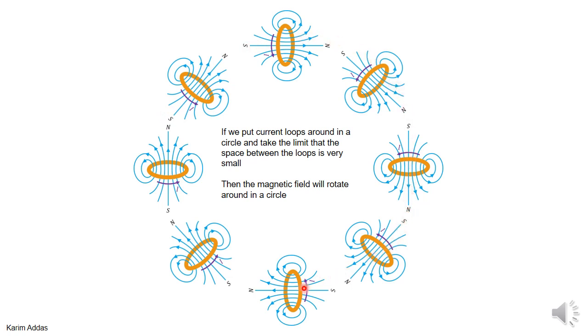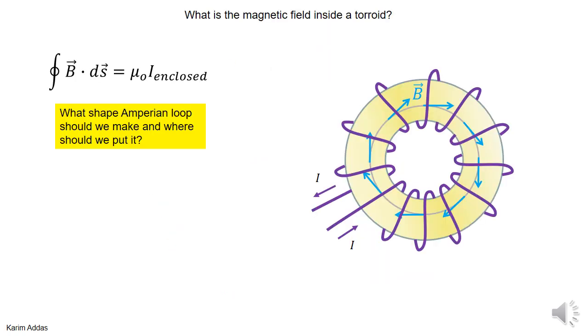Then the magnetic field will be going around basically in a circle inside this toroidal shape, and the amount of fringing that you see here will decrease. So you'll just get a magnetic field in this region, and outside you'll get no magnetic field. So this is the situation we have for a toroid.